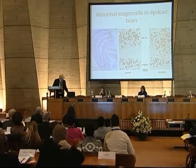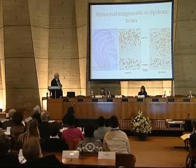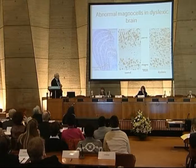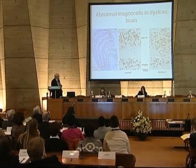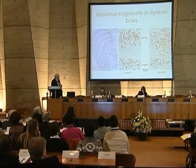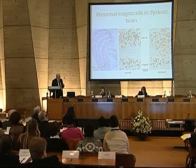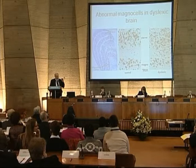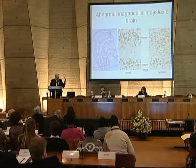Here is the evidence. In the magnocellular layers of the LGN, a controlled good-reader brain post-mortem shows a clear separation of magnocellular from parvocellular layers. In dyslexics, they're not separate — magnocells are not only smaller (30% smaller), but they also mismigrate into the parvocellular layers. This theme of mismigration connects to the ectopias I mentioned earlier, which are also an example of mismigration of certain cells.